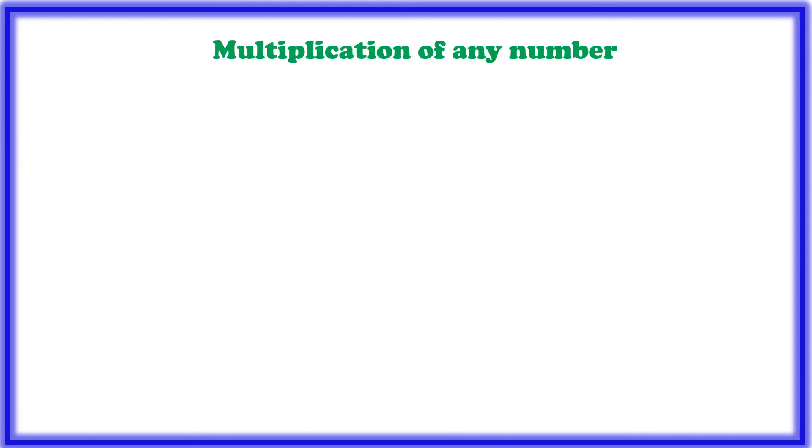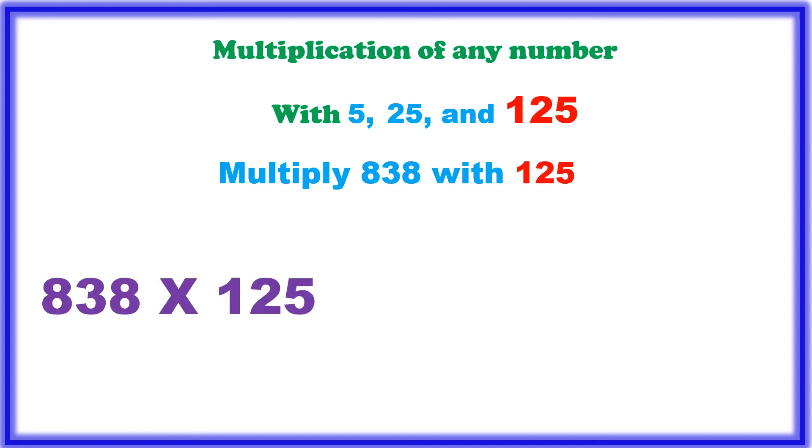Let we try one more example, multiplied by 125, multiply 838 with 125. So 125 is nothing but 1000 by 8. 8 is divided by 8, 1 time and 3 cannot be divisible by 8, so take 0 and then 1, 2 digits, 38.